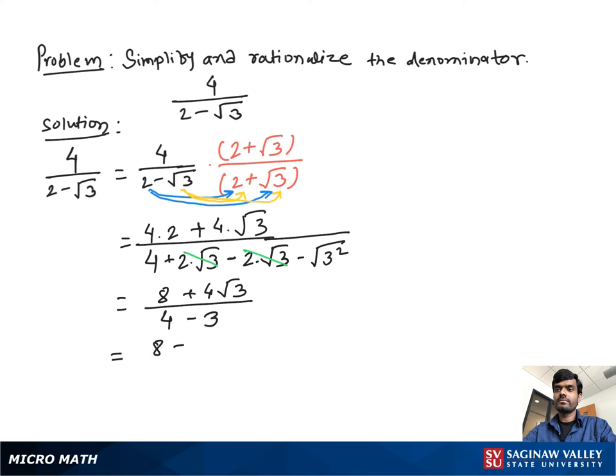Then we have 8 plus 4 square root 3 over 1, or we can write, taking 4 as common, 4 times (2 plus square root 3). This is our final answer.